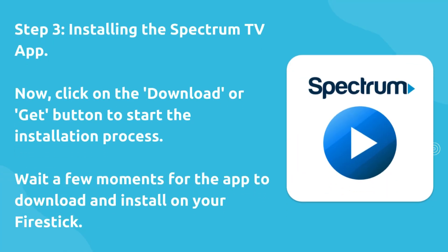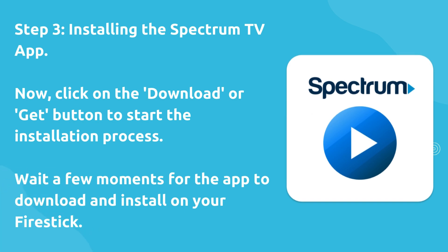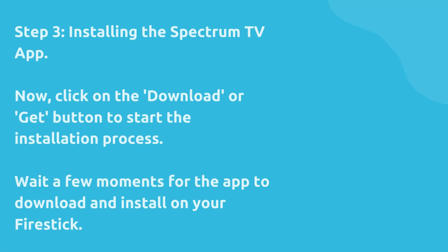Step 3: Installing the Spectrum TV app. Now click on the download or get button to start the installation process. Wait a few moments for the app to download and install on your Fire Stick.